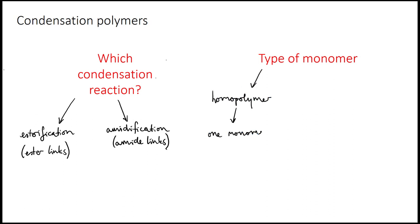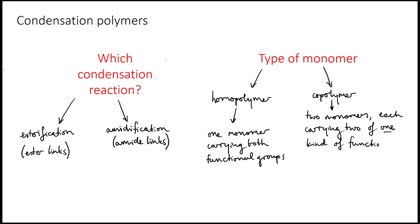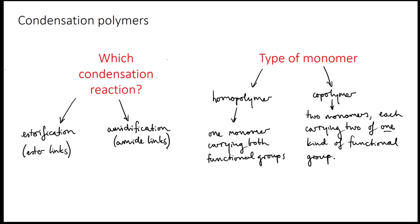Using one monomer that has two different functional groups, like polyglycolic acid, gives you a homopolymer, while using two different monomers, each with two of the same functional group, gives you a copolymer, like nylon. Although in this case, you don't have any choice about how the two monomers are ordered in the chain — they have to be alternating.